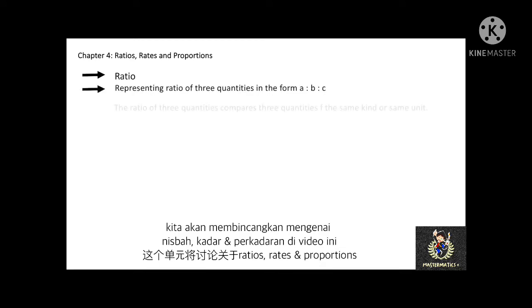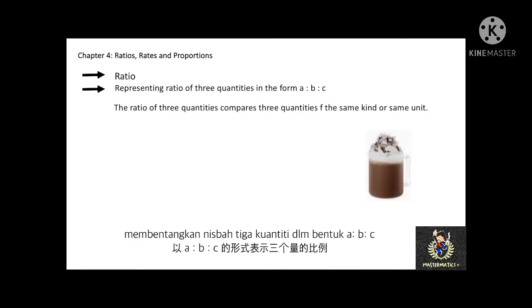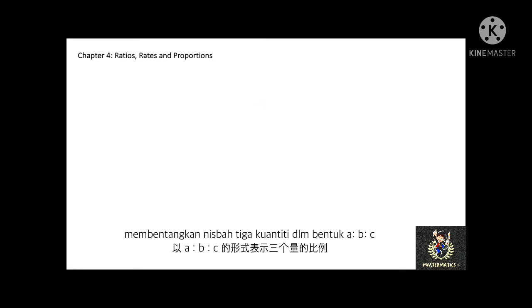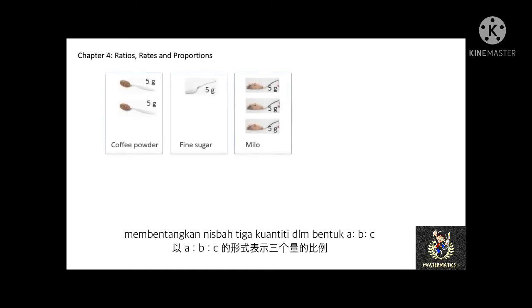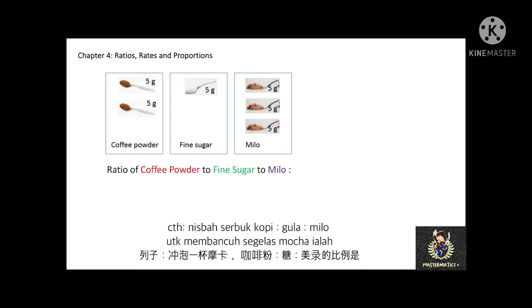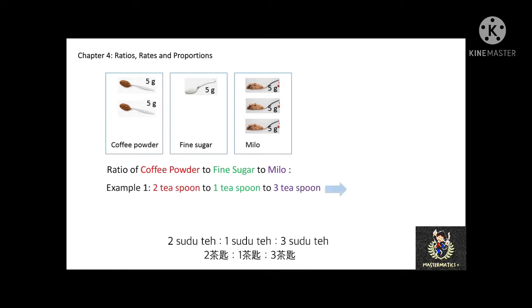To introduce what a ratio is, I will use this mocha recipe as an example. To make a cup of mocha, the basic ingredients are 2 teaspoons of coffee powder, 1 teaspoon of fine sugar, and 3 teaspoons of milk. We can represent a ratio of two quantities in the form of A to B, and a ratio of three quantities in the form of A to B to C. So the ratio of coffee powder to fine sugar to milk is 2 to 1 to 3.